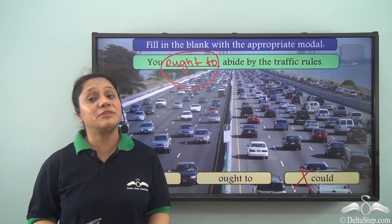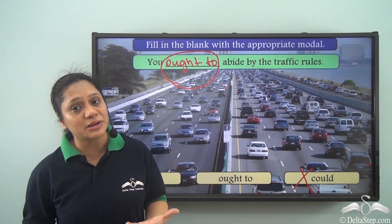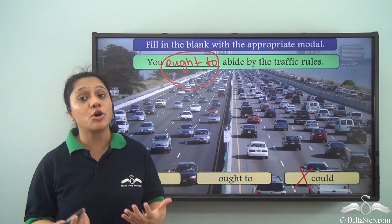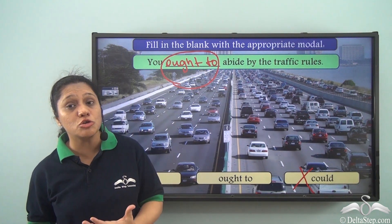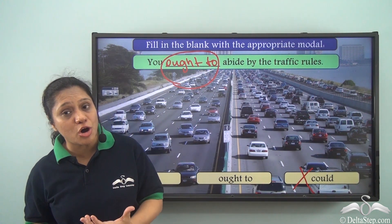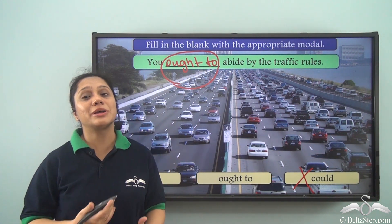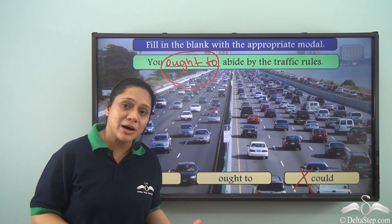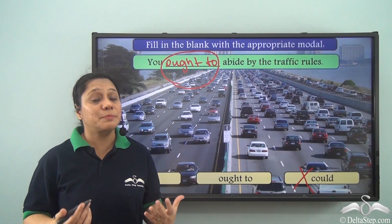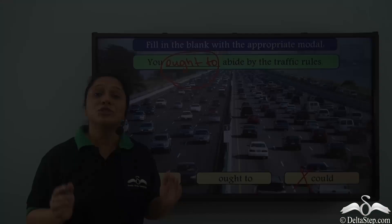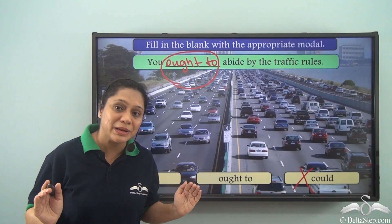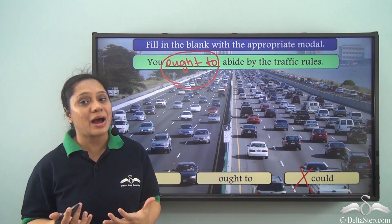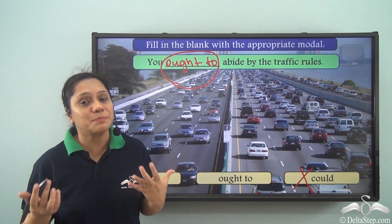So which modal verbs did we use to give advice? We used should, must, ought to, should not, and ought not to to give advice. Depending on the use of the modal verbs, they express different meanings. So read the complete sentence to understand what the modal verb is trying to express. We will soon learn about other modal verbs.